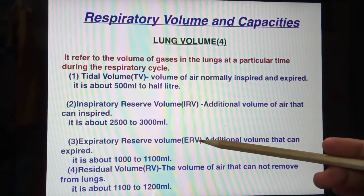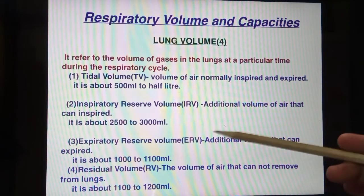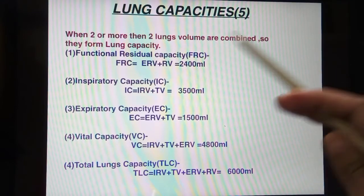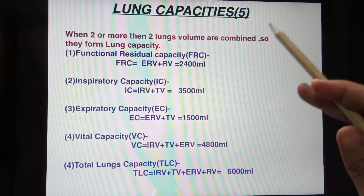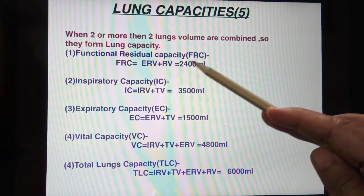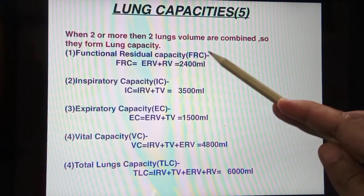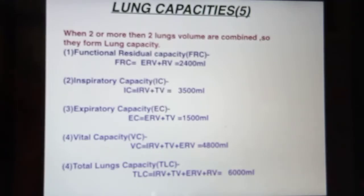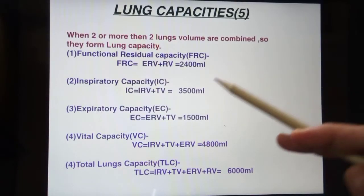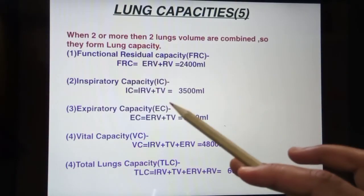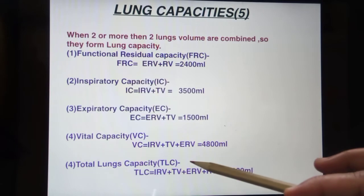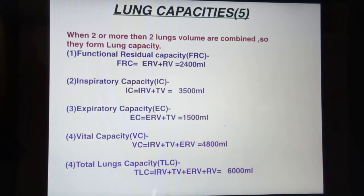So those are the four lung volumes: tidal volume, inspiratory reserve volume, expiratory reserve volume, and residual volume. Now next is lung capacity. When two or more lung volumes are combined together they form lung capacity. There are five capacities: functional residual capacity, inspiratory capacity, expiratory capacity, vital capacity, and total lung capacity.